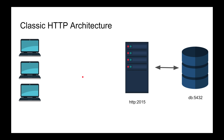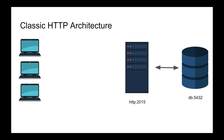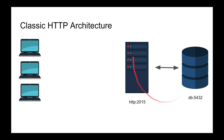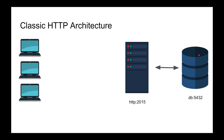A classic architecture looks like this: a server running on port 2015, an HTTP server — let's say Node.js — and a database on port 5432, probably Postgres, with connection pooling on the backend. The Node.js app connects to the Postgres database and queries any requests. The client sends a GET request to the server, which translates into a SQL query to Postgres.